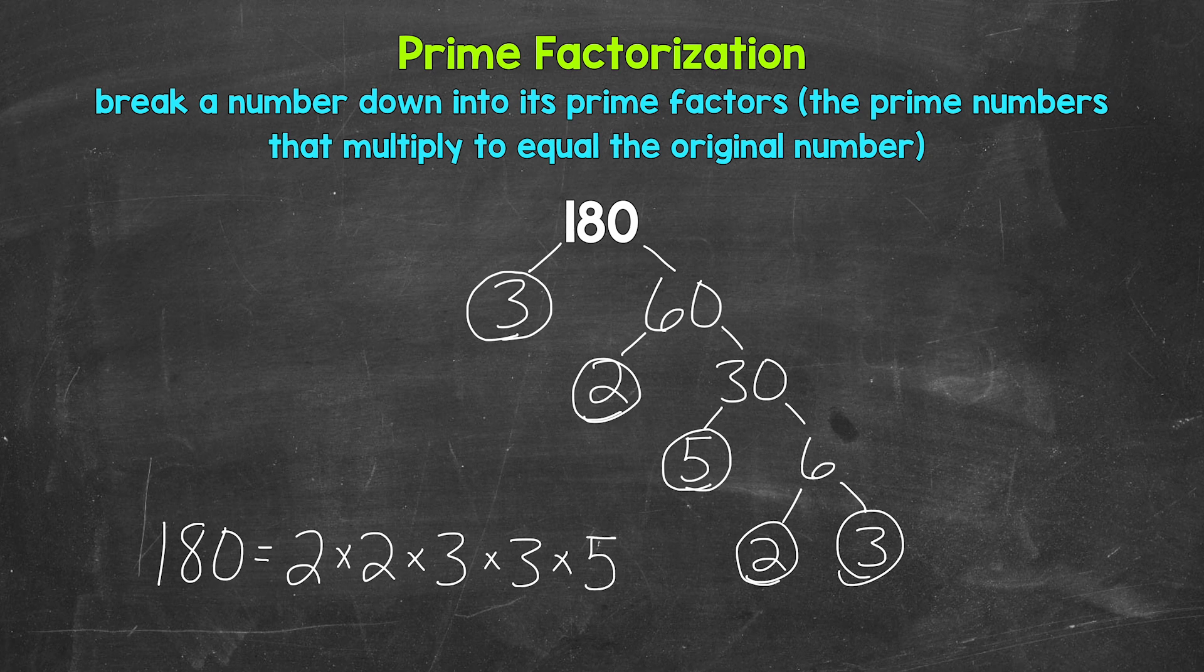If we have the correct prime numbers, they will multiply to equal our original number. So let's check. 2 times 2 is 4, times 3 is 12, times 3 is 36, times 5 is 180. So we are correct here.